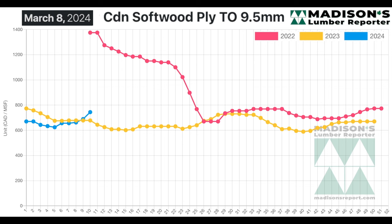And so beginning here with plywood, Canadian softwood plywood out of Toronto, 9.5 millimeters or three eighths inch. You can see that blue line for this year, 2024 prices rising already for the past couple of weeks.